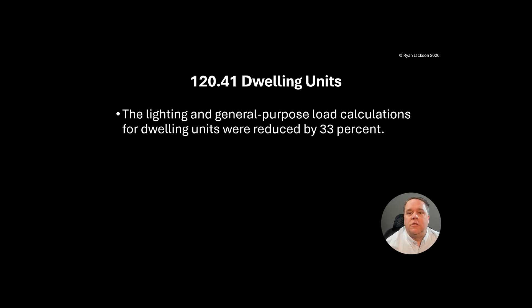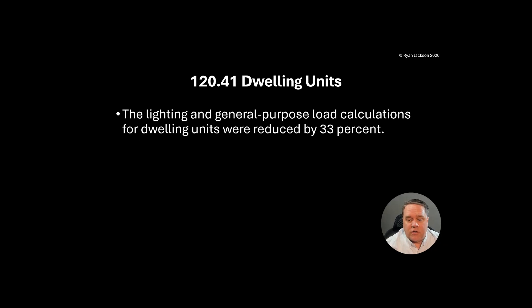Exactly what it sounds like — we reduced the load calculation for dwelling units. Back in the 2020 code, they went through and reduced a bunch of the lighting load calculations for all different occupancies throughout the NEC, except for dwelling units. The reason was the task group said it's basically a one-year window in the code revision process, so they decided to tackle non-residential first.